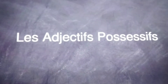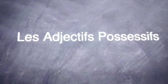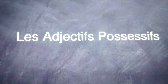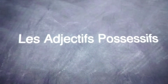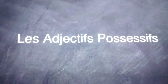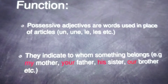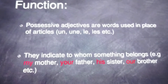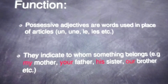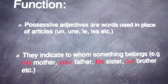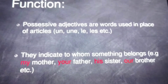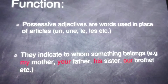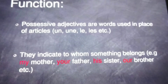Possessive adjectives, as we see in English — everybody knows what a possessive adjective is. It shows possession of an object or a human being. Possessive adjectives are the words used in place of articles: un, une, la, le, l'apostrophe, etc. — both definite and indefinite articles.